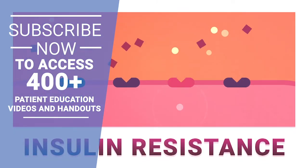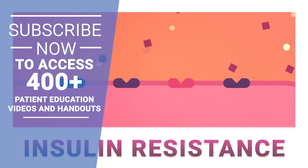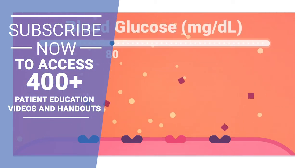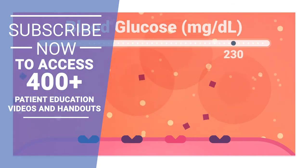At first, your pancreas makes extra insulin. But over time, your pancreas isn't able to keep up and can't make enough insulin to keep your blood glucose levels normal. Without enough insulin, glucose builds up in your blood and your blood glucose levels become too high.